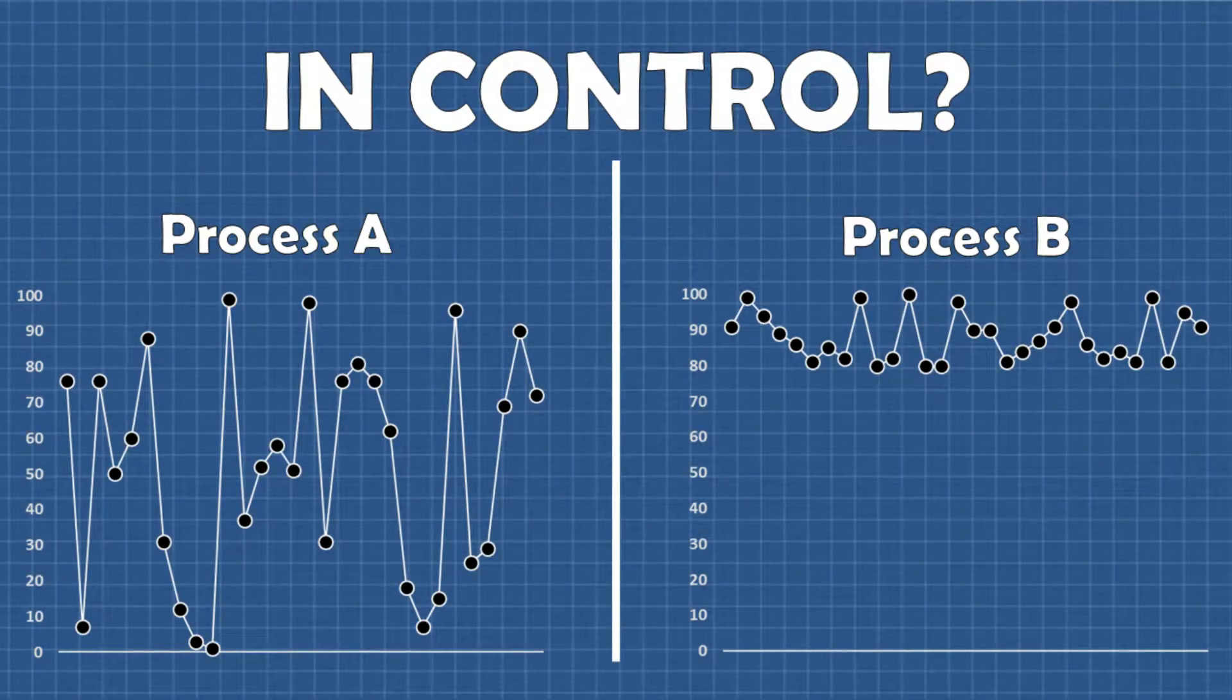Before I get into things I want to pose a question. Here we have two charts where I plotted output data from two different processes over time. Both data sets have the same scale of 0 to 100. My question to you is are these processes in control or is one in control and the other out of control? Let me know what you think and why in the comments below and by the end of the video I'll tell you the answer and why.